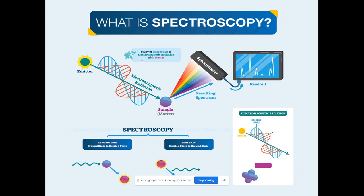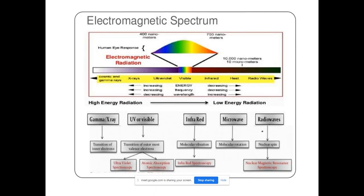Before discussing photochemical reactions further, let's review spectroscopy, which is important in photochemistry. Spectroscopy is the study of interaction of electromagnetic radiation with matter (solid, liquid, or gas). There are two types: absorption spectroscopy (ground state to excited state) and emission spectroscopy (excited state to ground state). The electromagnetic spectrum ranges from cosmic rays and gamma rays, through X-rays, ultraviolet, visible, infrared, microwave, to radio waves.